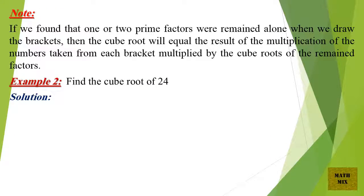Note: If we find that one or two prime factors remained alone when we draw the brackets, then the cube root will equal the result of the multiplication of the numbers taken from each bracket, multiplied by the cube roots of the remaining factors.